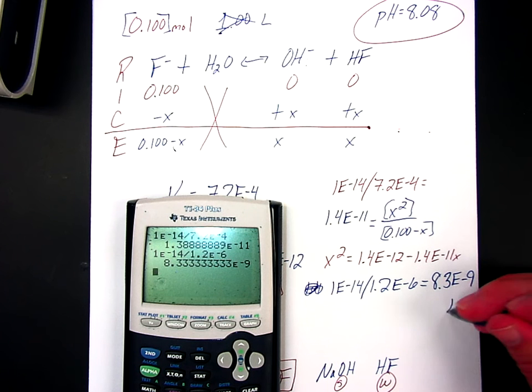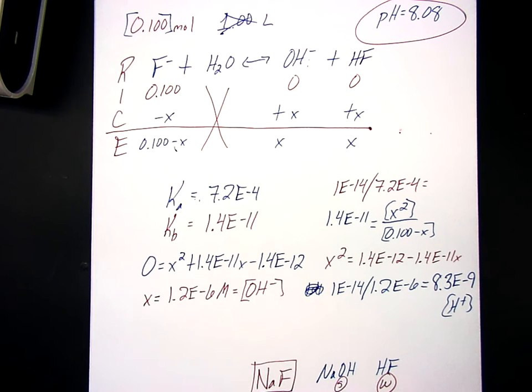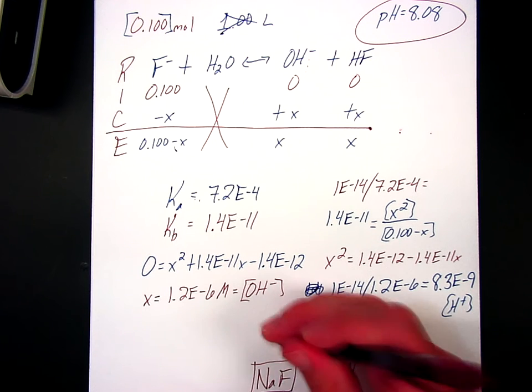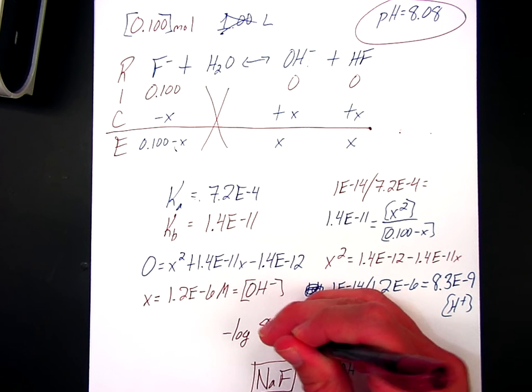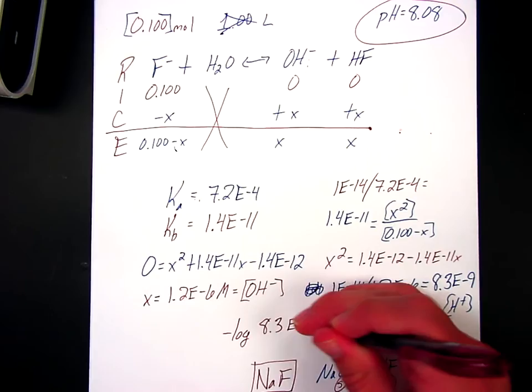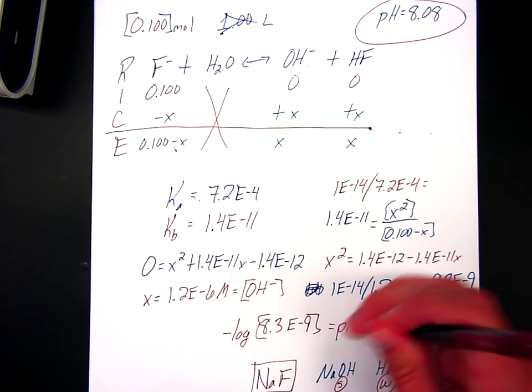So this is an H plus concentration right there. So now I have a strong concentration. So as always, if I go negative log of a strong concentration, negative log of 8.3E negative 9, that will equal pH.